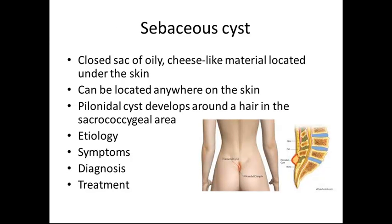Sebaceous cysts are closed sacs of oily, cheese-like material located under the skin. They can be located anywhere on the skin. Pilonidal cysts develop around the hair in the sacral-coccygeal area, as shown in the picture on the right — a cyst at the sacral-coccygeal area in the lower back and pelvic region.